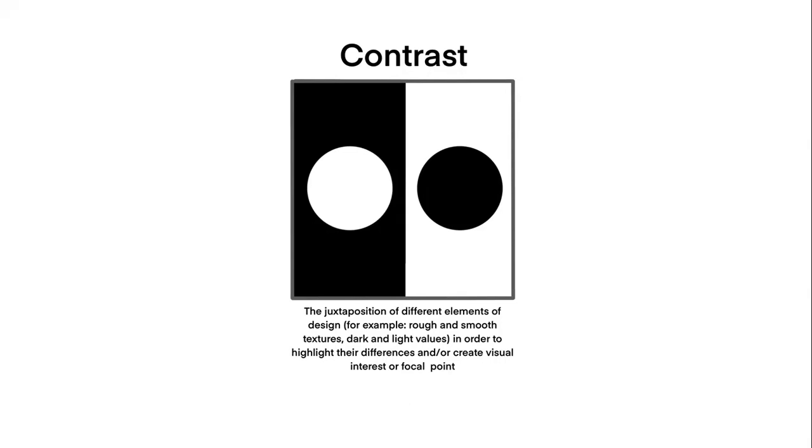Up next is emphasis. Emphasis is putting special attention or giving importance to a part of an artwork. Emphasis can be achieved through placement, contrast, color, size, and repetition. In this example, emphasis is achieved by having a circle that is bigger than the others and a different color.